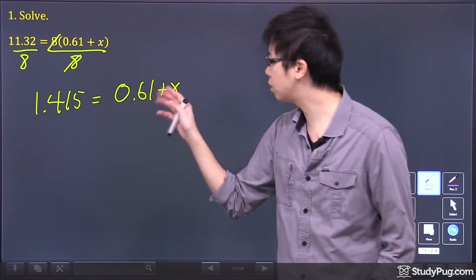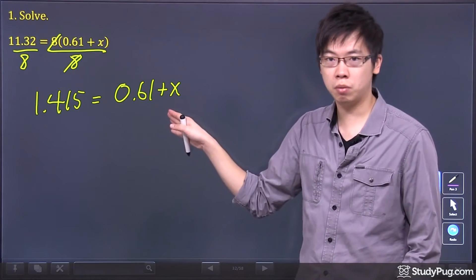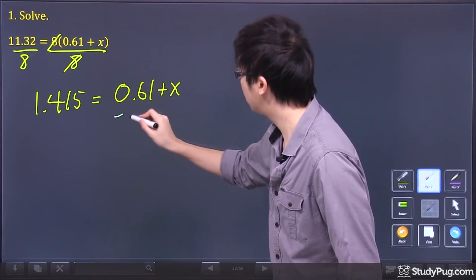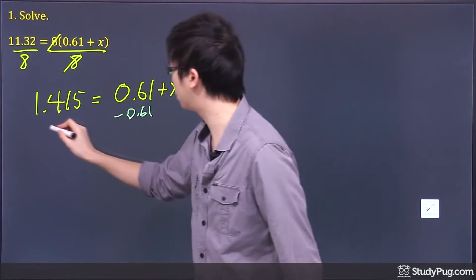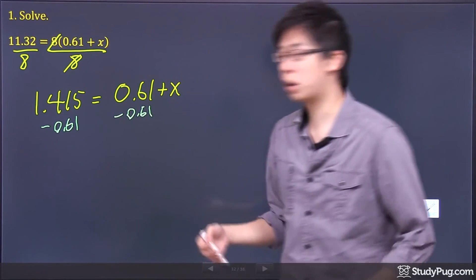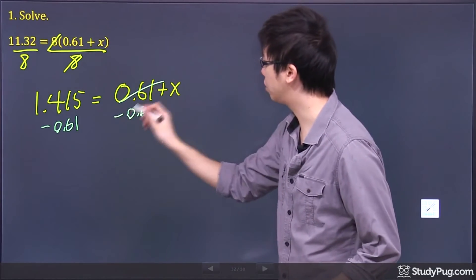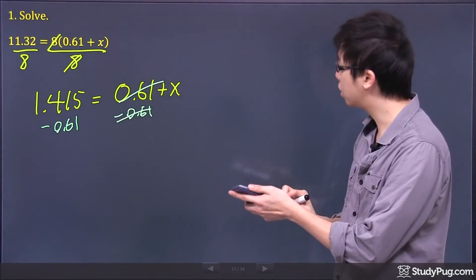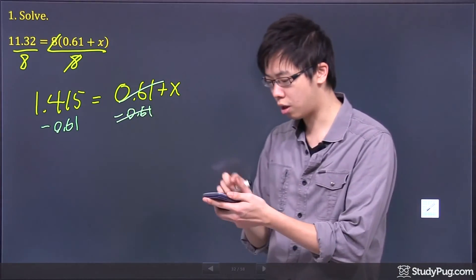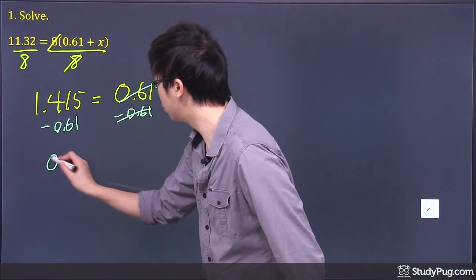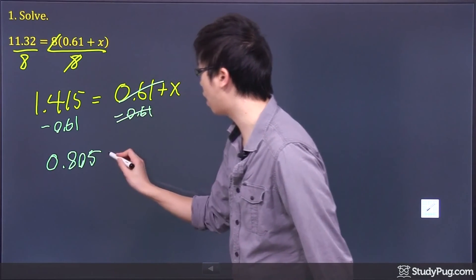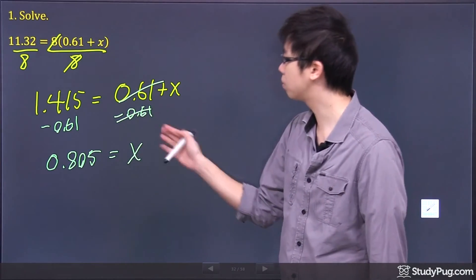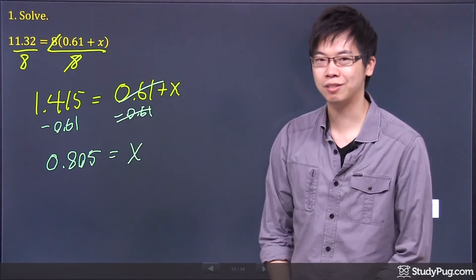Once you're done with that, there's a plus between the two. To remove this guy right here, I would subtract 0.61 from both sides. That would get cancelled. So you take your 1.415 and minus 0.61, you get yourself 0.805. And that is the final answer for this question, because there's nothing else — it's just x. Thanks for watching.